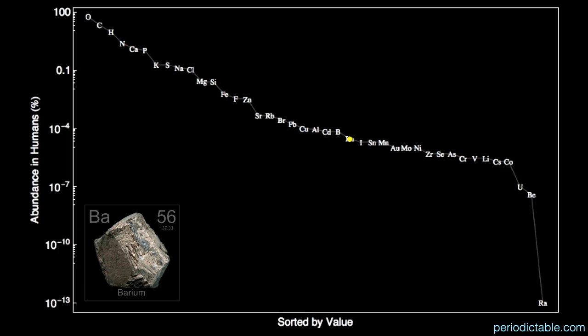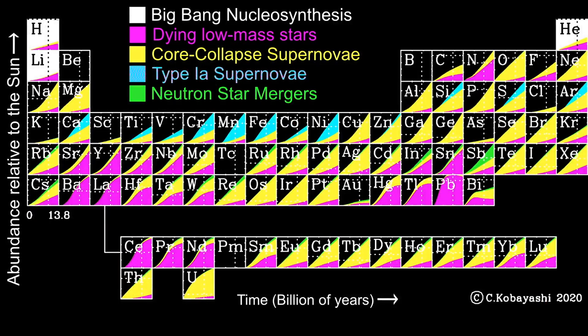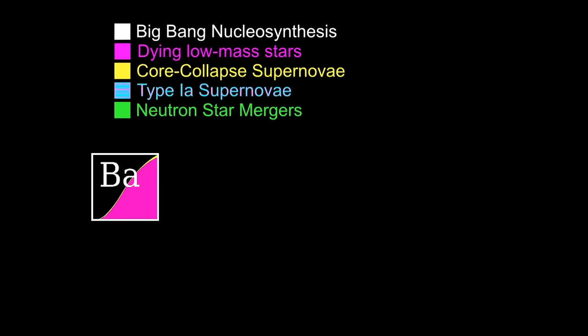If you could reduce the people in the United States to elements, there would be about 10 people made of barium. This complicated version of the periodic table shows the evolution of the elements through the history of the universe. Here you see each element square with a tiny chart showing that element's growth over the age of the universe by various processes. Barium is here — let's look at just barium a little closer.